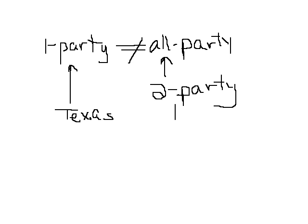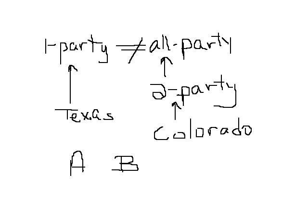For the sake of argument, let's say Colorado is an all-party consent state. In Texas, if Person A is talking with Person B, only those two are present, and A has a tape recorder in his pocket that B can't see — A is recording and knows it — that would be lawful in Texas because one party, A, knows about the recording. B doesn't know, but B cannot successfully sue A for a violation of the law.